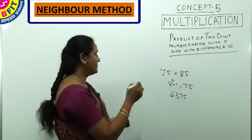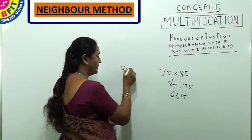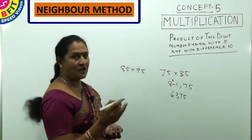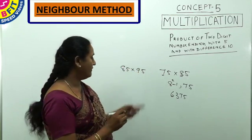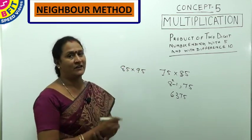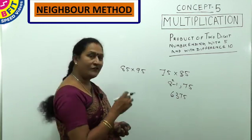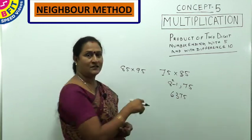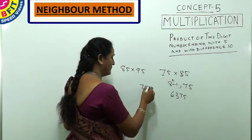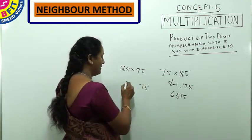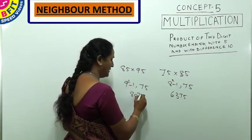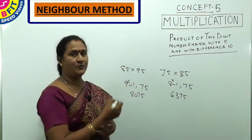Suppose you are asked to find the product of 85 and 95. The last two digits will be 75, and for the remaining digits: 9² = 81, minus 1 = 80. So the answer is 8075. Seeing the question itself, we can write the answer without working it out.